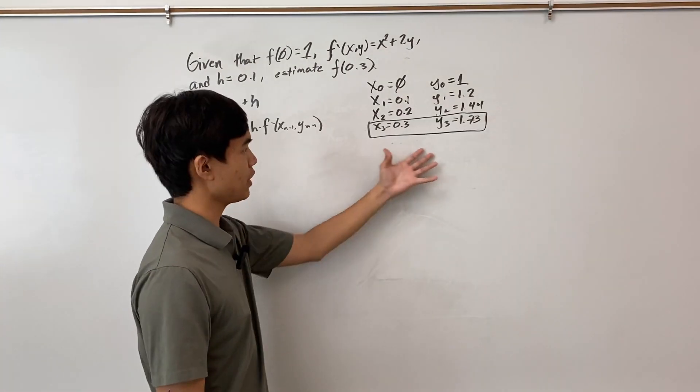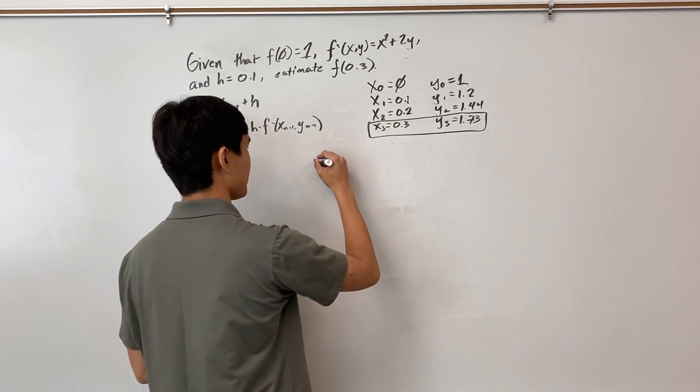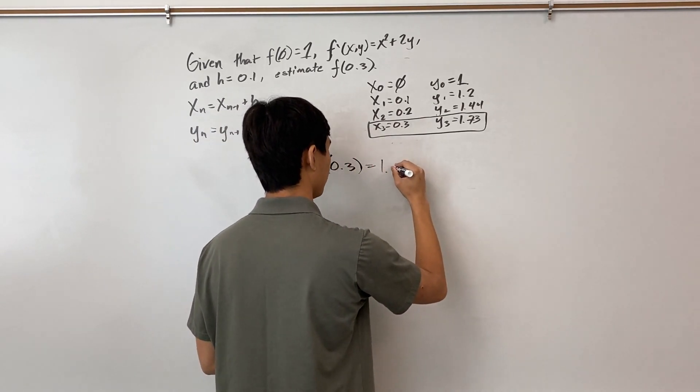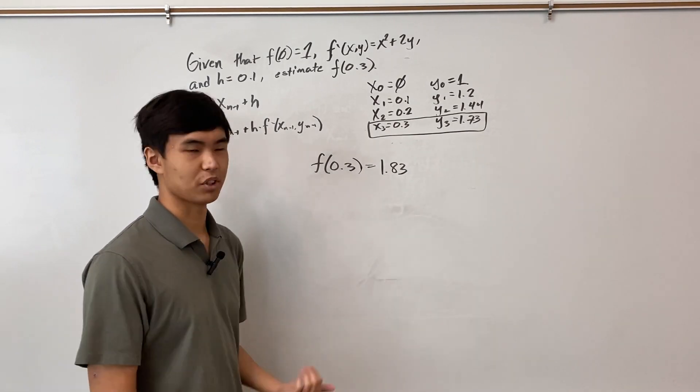So this is our approximation of f(0.3). And by the way, the real value of f(0.3) is 1.83. We were still off, but it wasn't by a whole lot.